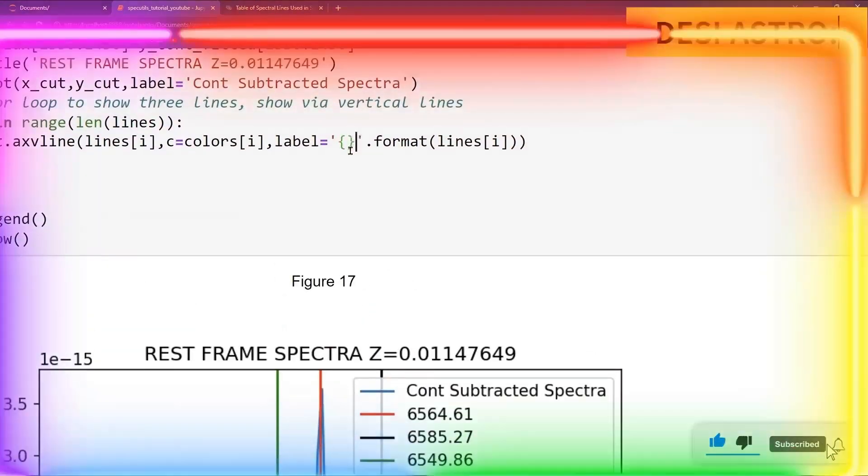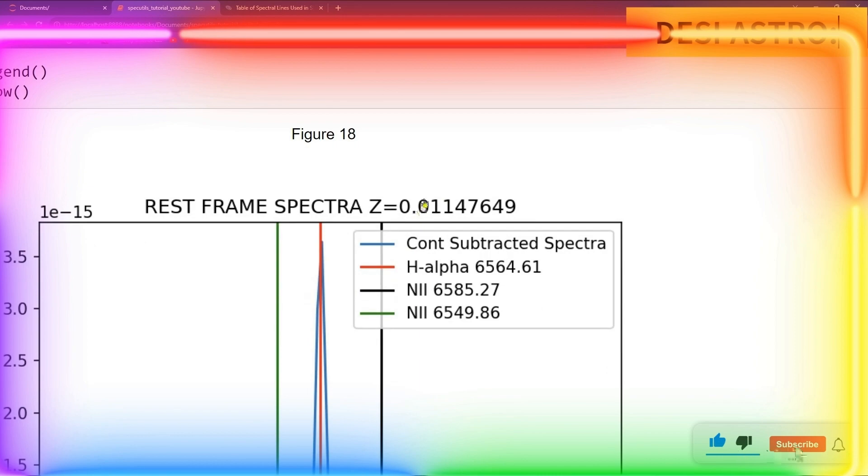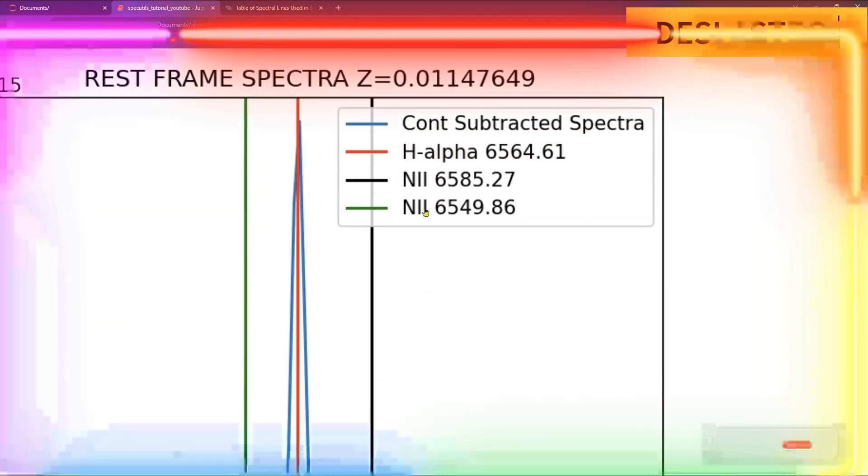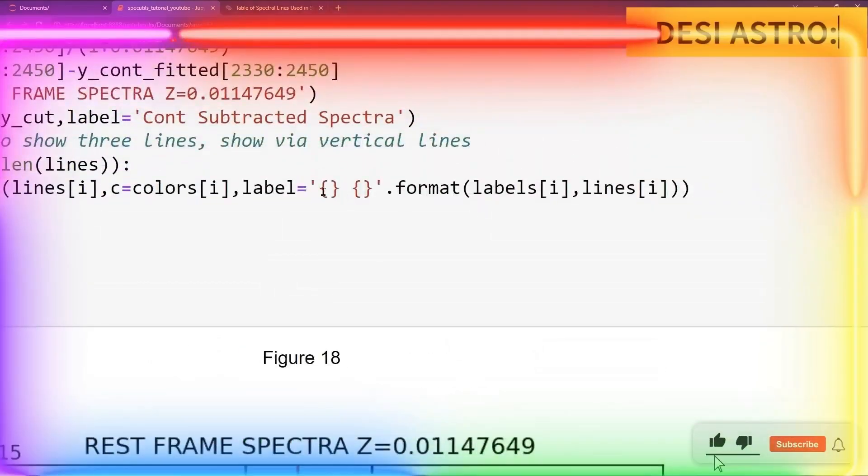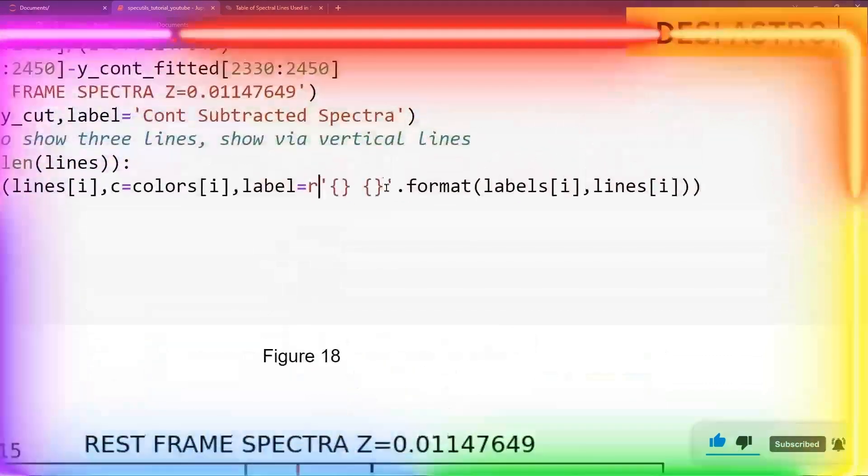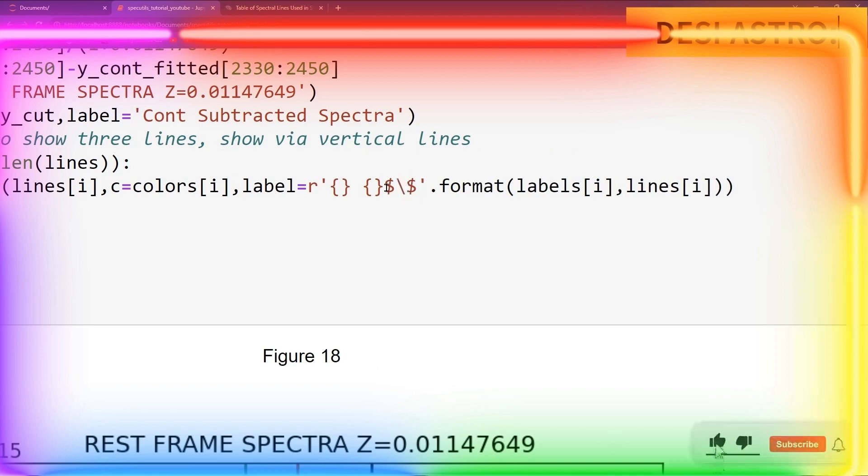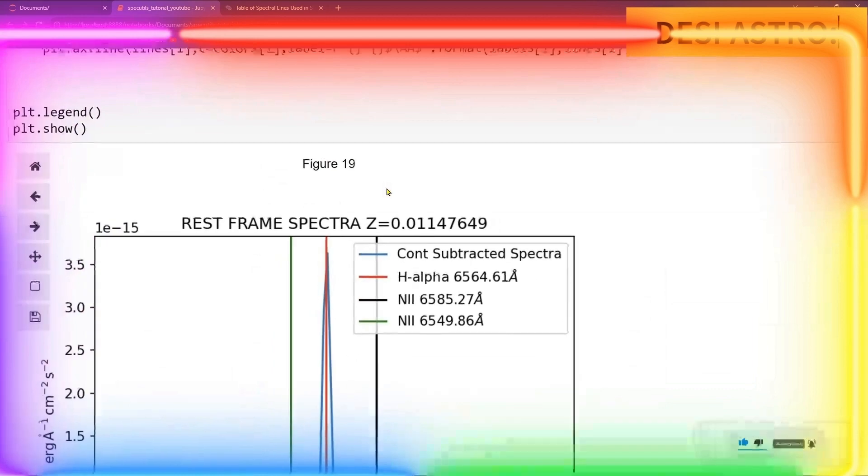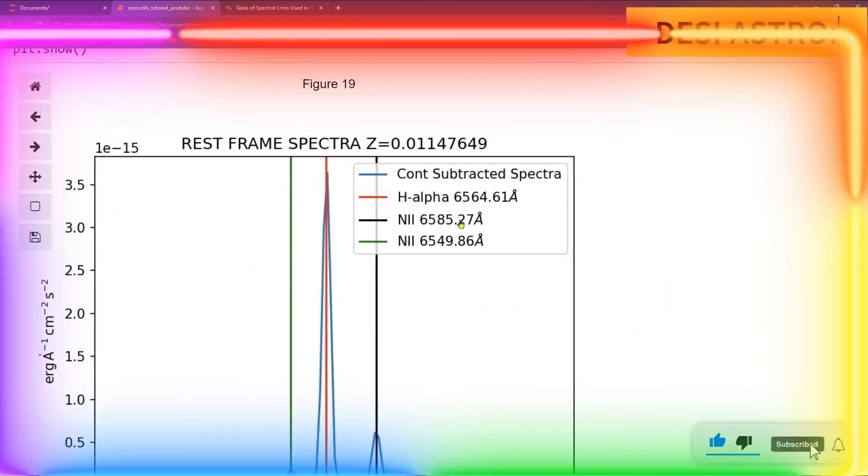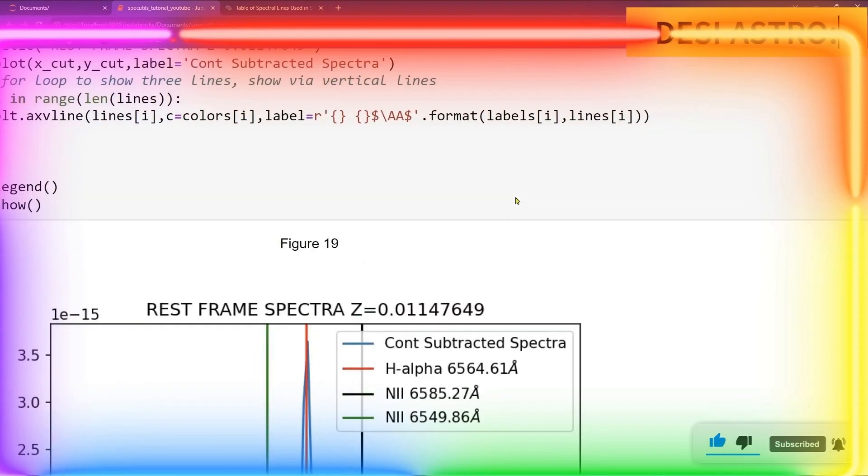For that just go here and give one bracket and labels of i. Run it. Here you got a more descriptive spectra. You can see that H-alpha is at 6564, N2 is 6585, and again N2 is 6549 angstrom. You can also put angstrom, for that type here backslash and you can put here latex format with dollar signs and command for angstrom. You can see here you got angstrom in front of the number, this is the quantity and unit in angstrom. This is how you can do the labeling.